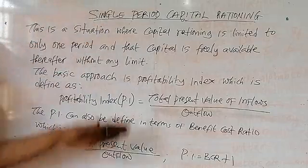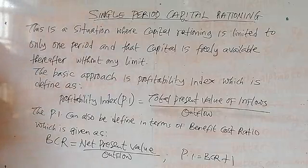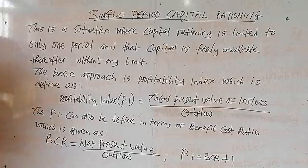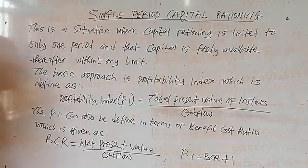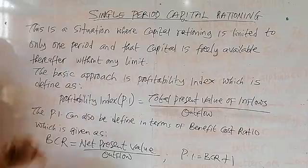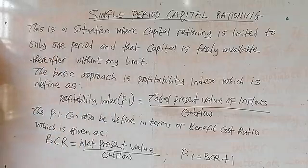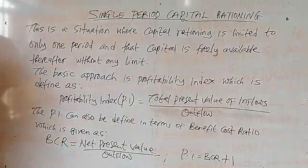Today we are looking at single-period capital rationing, taking it one topic at a time. We will look at divisible projects, mutually exclusive projects, indivisible projects, and mutually independent projects. Single-period capital rationing is a situation where capital rationing is limited to only one period, and capital is freely available thereafter without heavy limits.